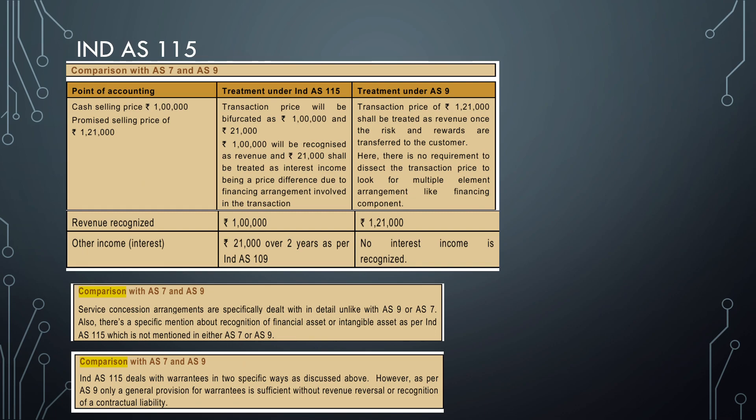Move on to the next one. Cash selling price Rs. 1 lakh and promised selling price Rs. 1.21 lakhs. Fairly straightforward. In IND AS, Rs. 1 lakh as you all know, this Rs. 21,000 is treated as interest income and it will be disclosed under other income. Whereas in the case of AS 9, there is no partition as such. Once the risk and rewards are transferred to the customer, the entire Rs. 1.21 lakhs will be recognized and there is no need to separately recognize the interest income.